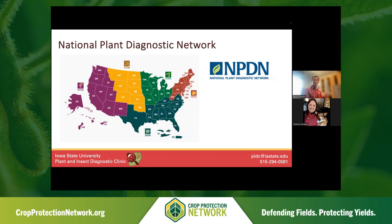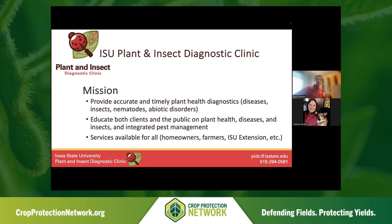Coming back to the national plant diagnostic network map, every state is going to have at least one diagnostic lab that is a member of the network, and that includes U.S. territories like Puerto Rico and Guam. Iowa's NPDN lab is the Iowa State University Plant and Insect Diagnostic Clinic. Our mission is to provide accurate and timely plant health diagnostics in the realm of insects, nematodes, and abiotic disorders of plants. We also focus on educating clients and the public on plant health, plant diseases, insect problems on plants, and the backbone of all this — integrated pest management.